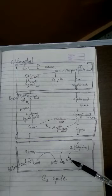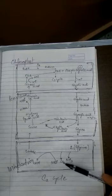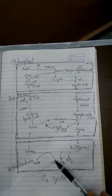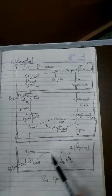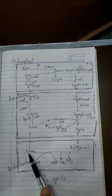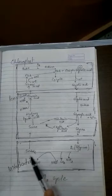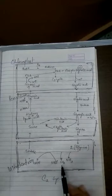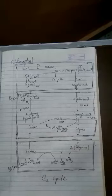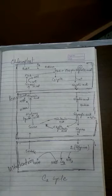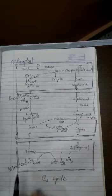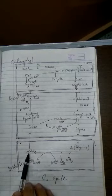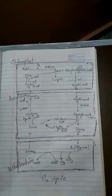Glycine is then transported into the mitochondria, where two molecules of glycine react together to liberate one molecule of ammonia, one molecule of carbon dioxide, and through oxidation, serine is formed. Serine is another amino acid. There is liberation of carbon dioxide from the mitochondria during this process, which is why it is called photorespiration.